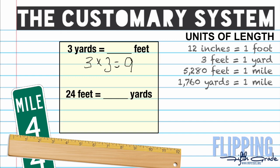Now we're going to do the reverse for the next problem. We have 24 feet equals how many yards. Since feet are smaller and we're converting to a larger unit, we want to use division. So we're going to take 24 divided by three, and when we do that we get the answer of eight. So 24 feet equals eight yards.